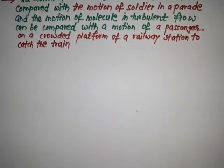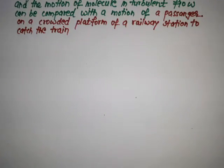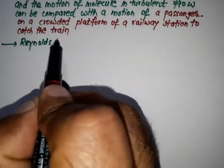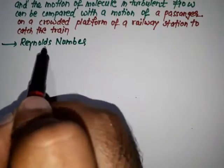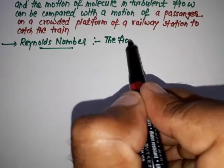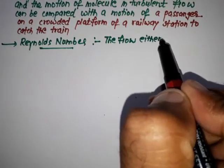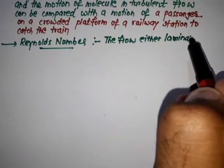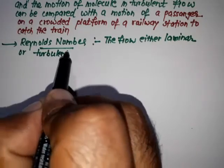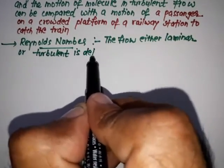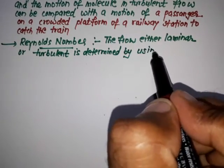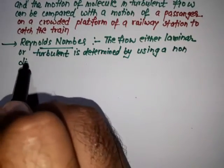Now we try to understand turbulent and laminar flow in terms of Reynolds number. The flow, either laminar or turbulent, is determined by using a non-dimensional number.